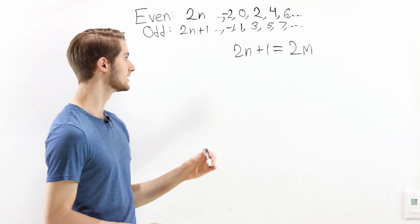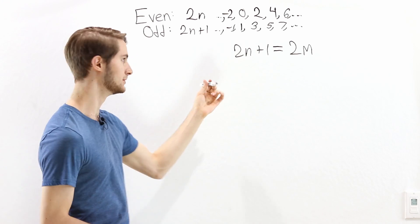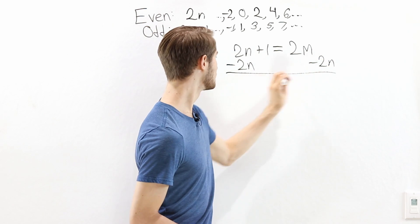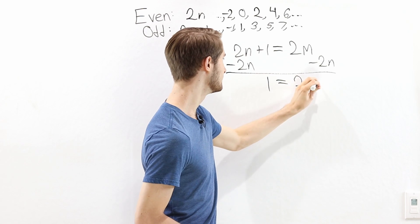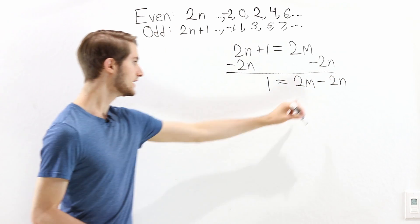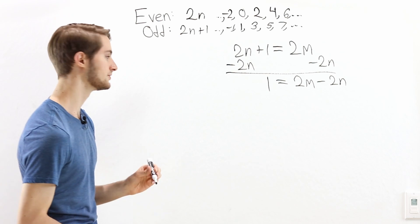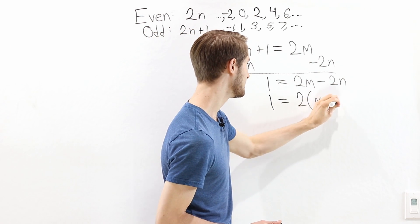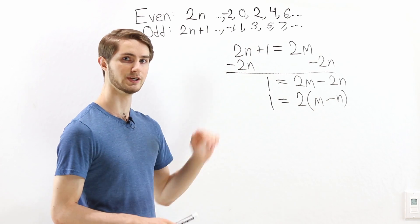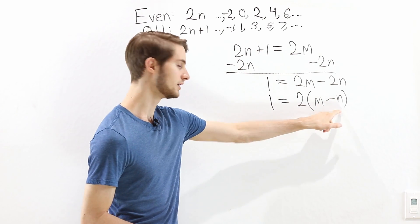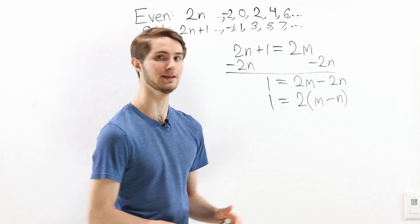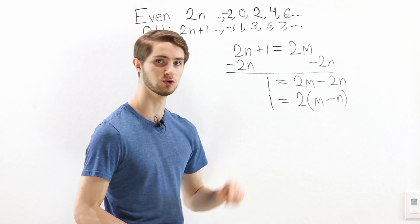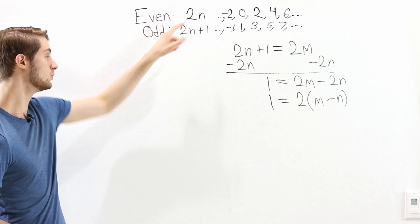So now we have this equation. Let's subtract 2n from both sides. That's going to give us 1 equals 2m minus 2n. Now on the right side, we have a factor of 2 in both terms, so we can factor that out. That gives us 1 equals 2 times (m minus n). This equation is saying that 1 equals 2 times a whole number — in other words, 1 is even.